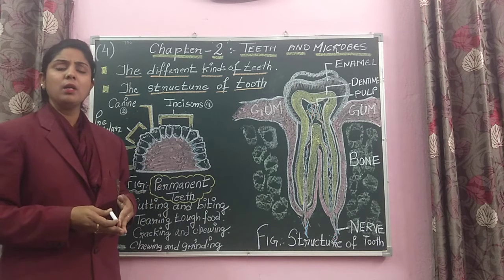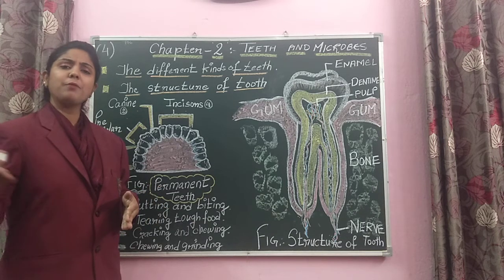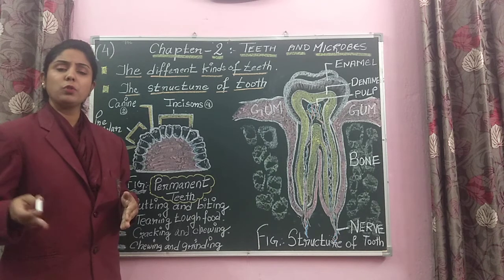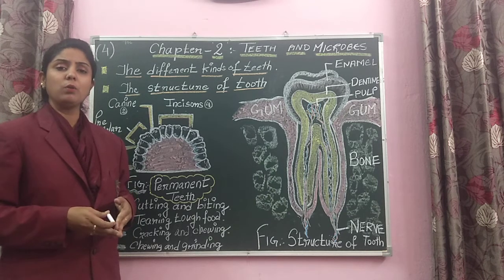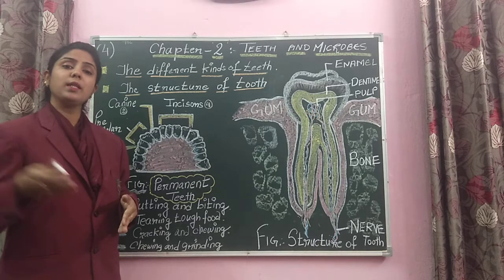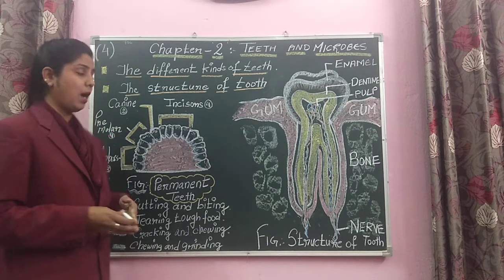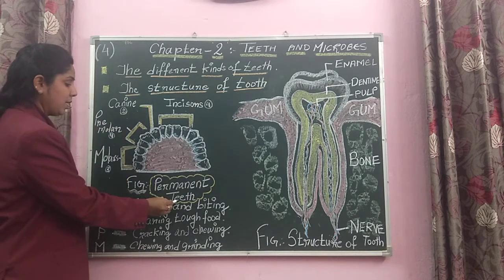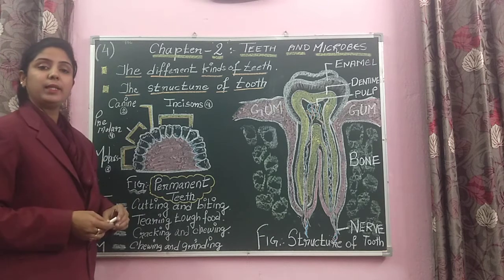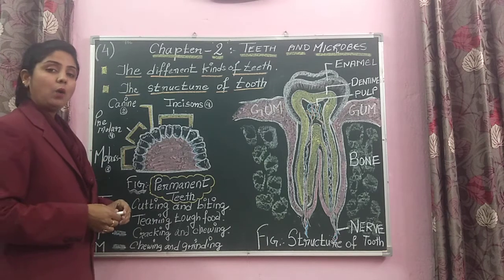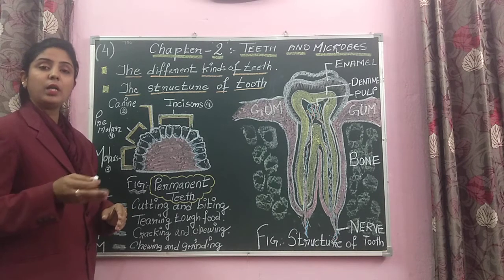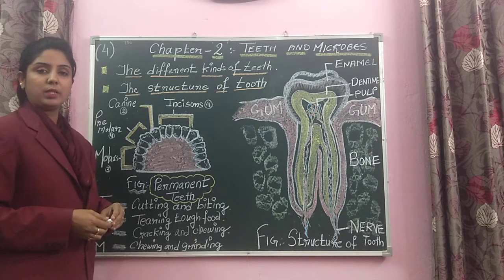After that, the milk teeth start falling out. At the age of 5 to 6 years, when they start falling out, new teeth appear. These teeth are called permanent teeth. Today we will look at the permanent teeth. How many total permanent teeth are there? There are 32 permanent teeth.